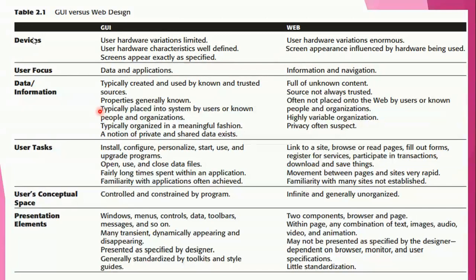In graphical user interface, data is typically placed into systems by known users or known organizations, so the developer knows who is using the system. In web interface it's all unknown — there will be unknown contents, the source is not always trusted, a number of organizations use the web interface, and privacy may not be guaranteed.